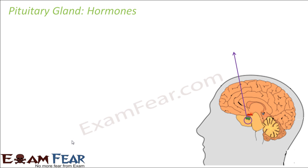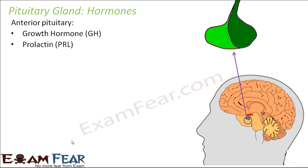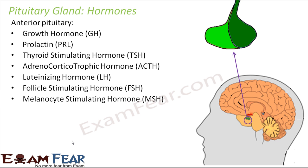The pituitary gland releases many different hormones, each controlling the secretion of a hormone from another endocrine gland. The anterior pituitary releases hormones such as growth hormone, prolactin, thyroid stimulating hormone, adrenocorticotrophic hormone, luteinizing hormone, follicle stimulating hormone, and melanocyte stimulating hormone.